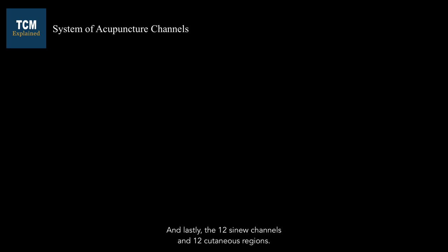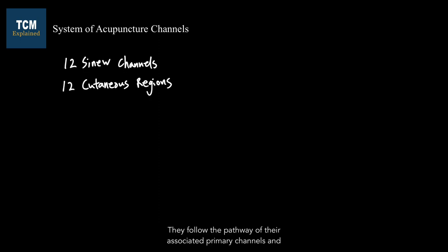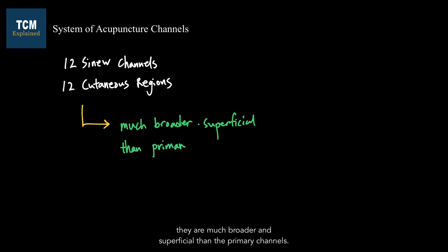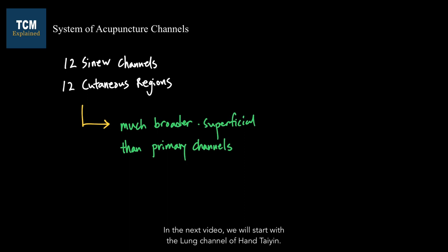And lastly, the 12 sinew channels and 12 cutaneous regions. They follow the pathway of their associated primary channels and are much broader and more superficial than the primary channels. So that was the introduction to TCM anatomy, and now we are ready to learn more. In the next video, we will start with the lung channel of hand tai yin.